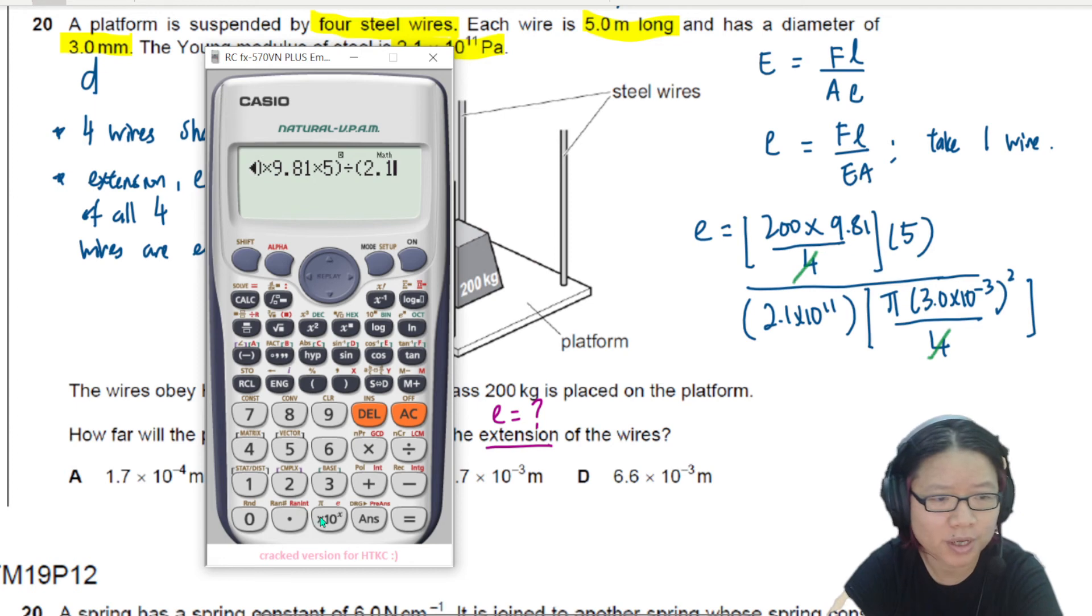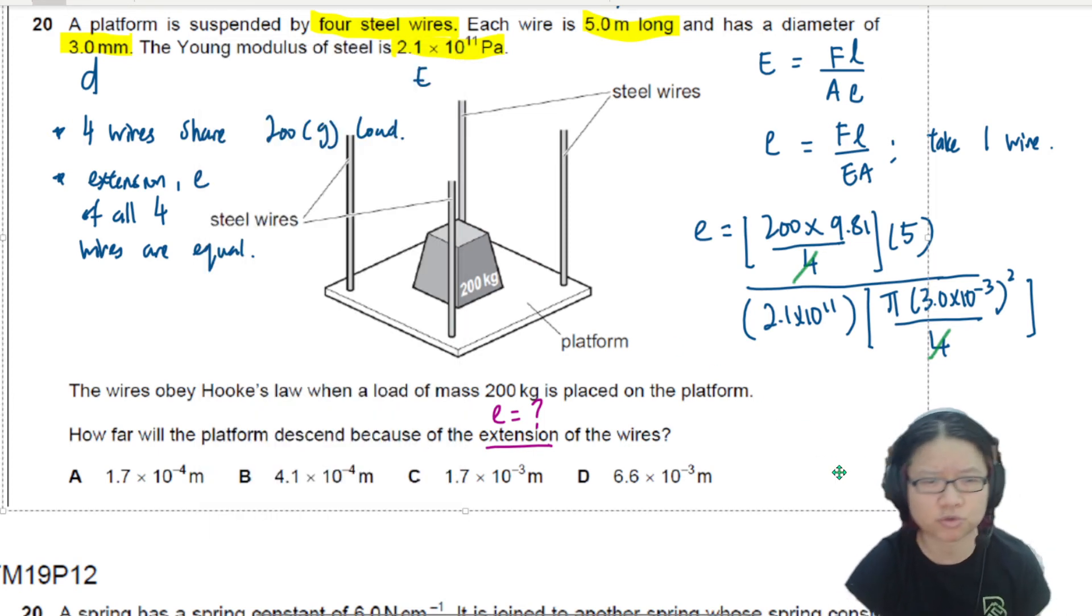Divided by 2.1 E 11. Divided by this thing. So pi. If you're not sure whether you can cross out your 4, don't cross out one. Include this pi over 4 again. But I know I can. So I'm pretty okay. 3 mm. So this is 3 millimeter convert to meter. That's a negative 3 there. So square. Press that number. Equal. I'll get 1.65 times 10 to the power of negative 3.